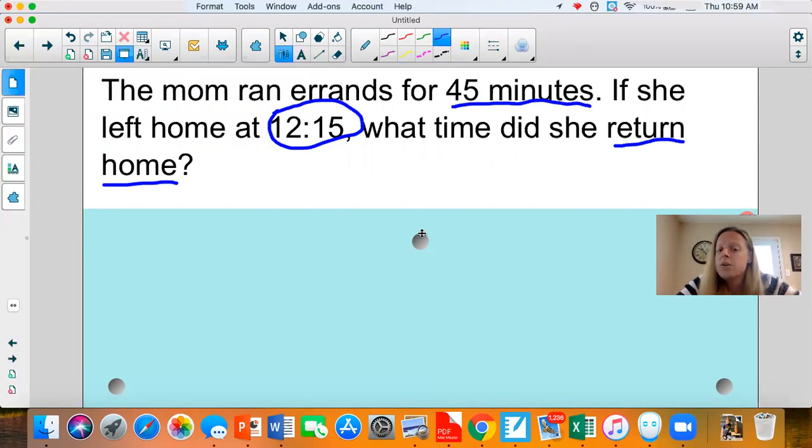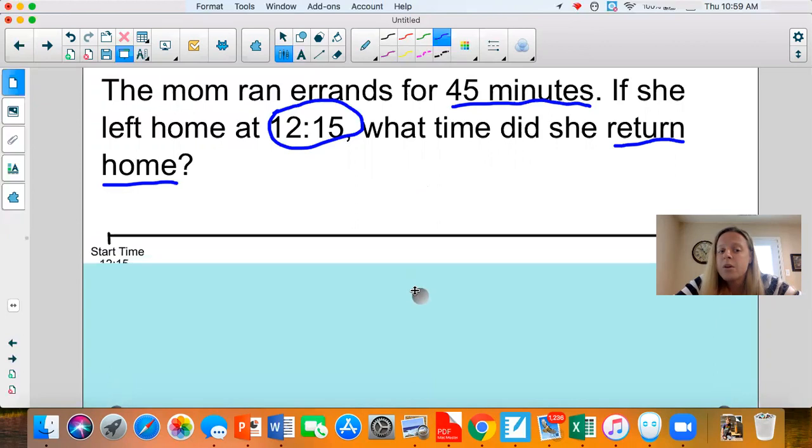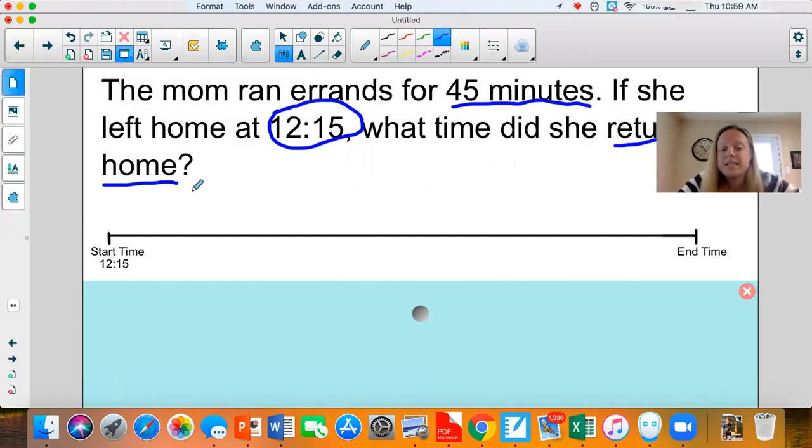In order to do this problem, we're going to use an open number line. If you look at my open number line, this means that our start time is 12:15, and we're still solving for our end time, the time she returns.